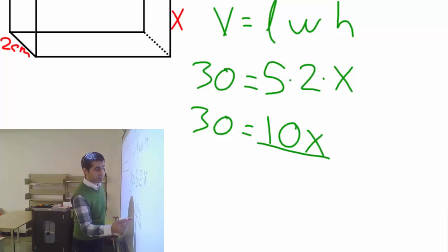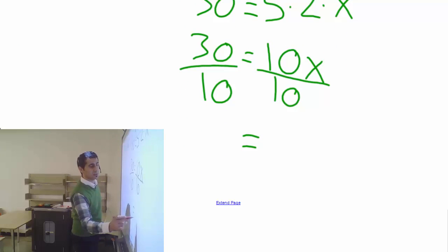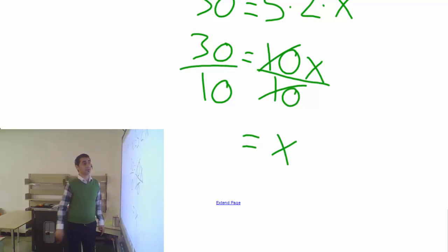Now you need to leave x alone because it's a multiplication. Here we can divide both sides.